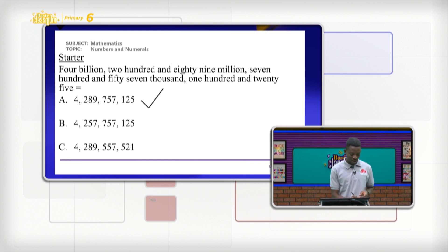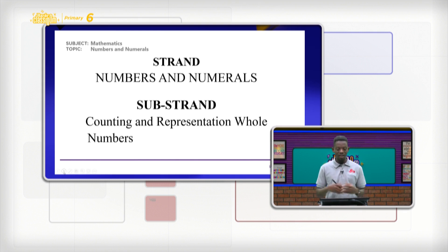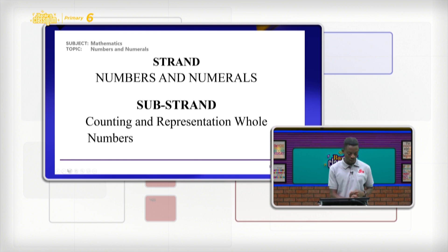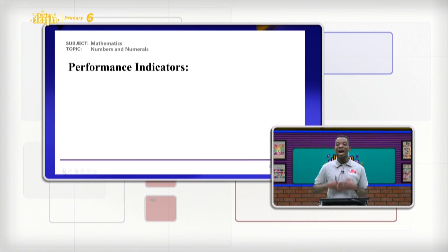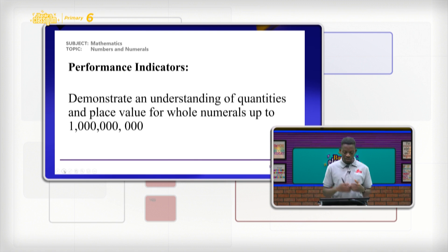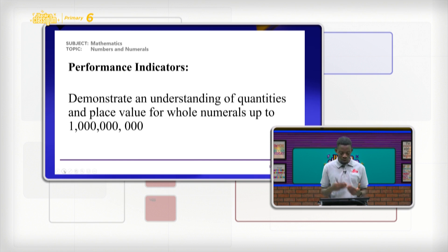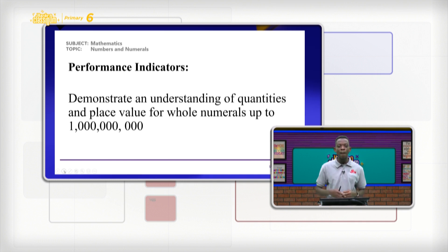Our answer is A, which is 4,289,757,125. Very good. So that is our starter for today. We are talking about numbers and numerals, and under that, we are still talking about counting and representing whole numbers. At the end of our lesson, we will be able to demonstrate and understand quantities of place values, counting up to billion.